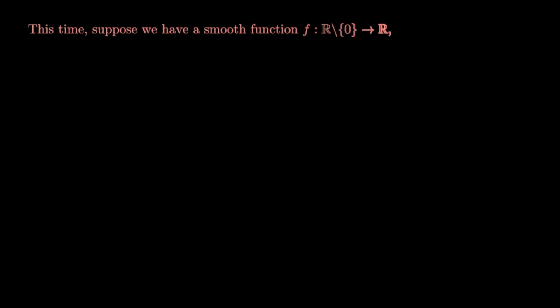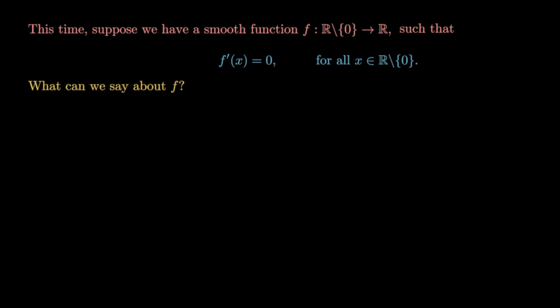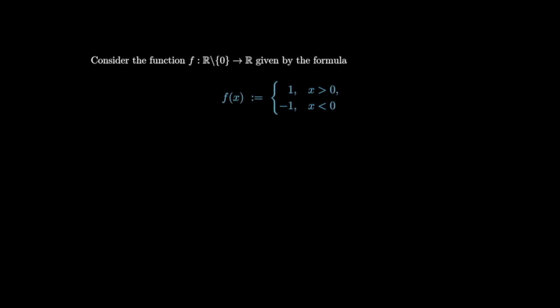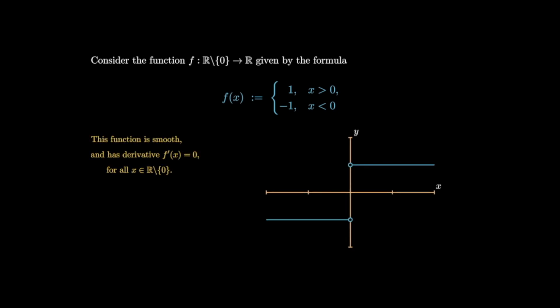This time, suppose we have a smooth function not on the real line but on the punctured real line — we remove the origin — such that the derivative is again zero at every point. What can we say about f? It turns out that f need not be constant. Consider the function on the punctured real line defined by f(x) = 1 for x > 0 and f(x) = −1 for x < 0. This function is smooth everywhere and has derivative zero at all points of its domain, but it is not constant.